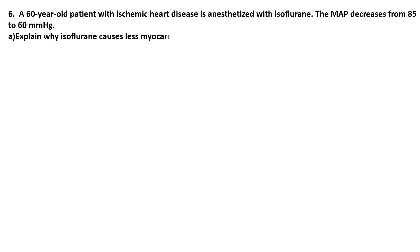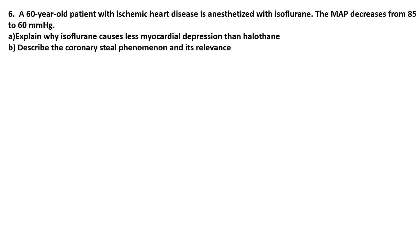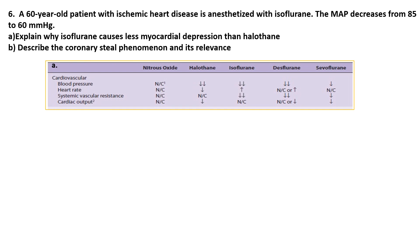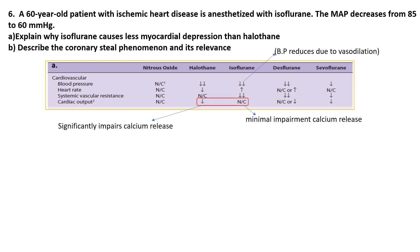A 60-year-old patient with ischemic heart disease is anesthetized with isoflurane. The MAP decreases from 85 to 60 mmHg. Explain why isoflurane causes less myocardial depression than halothane. Isoflurane causes less myocardial depression than halothane because it primarily reduces blood pressure through vasodilation rather than direct heart muscle suppression. Isoflurane minimally interferes with calcium channels and sarcoplasmic reticulum function essential for heart muscle contraction. In contrast, halothane strongly blocks these calcium pathways, leading to more significant impairment of heart pumping ability. This makes isoflurane's blood pressure effects easier to manage clinically.